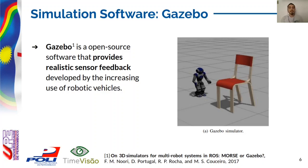Gazebo is an open-source software that provides realistic sensor feedback, developed for robot vehicles. It is designed to reproduce the dynamics of the environment accurately and to be used in a distributed modular architecture, being executed through two processes, where one is the server and the other one is the client. At the right side, we have the Gazebo 3D scene for our task.